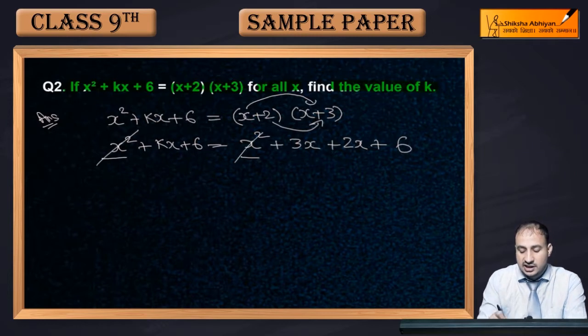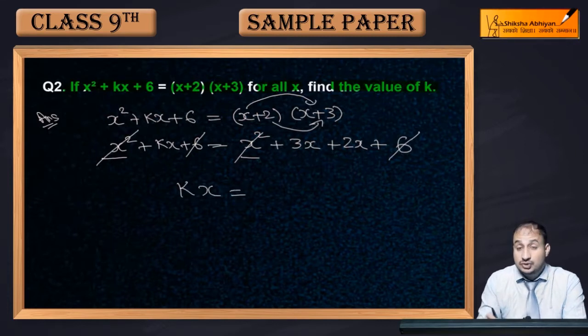Now you can see on both sides, left hand and right hand, there is x². It will cancel out. And 6 will cancel out with 6.